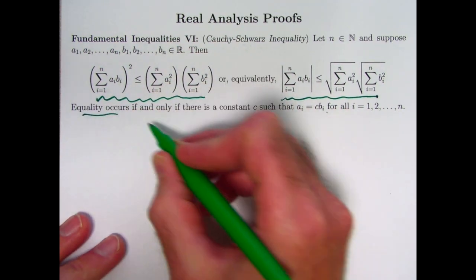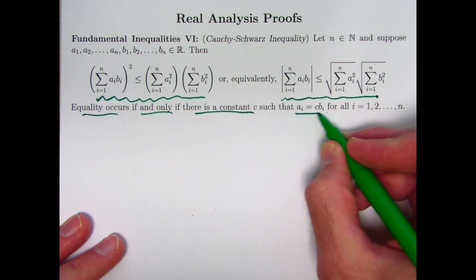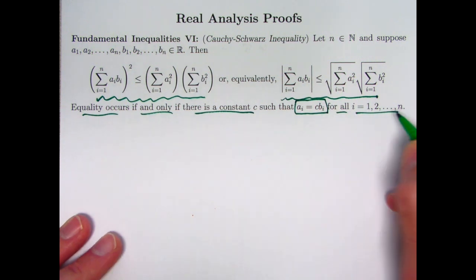Turns out equality occurs if and only if there is a constant c so that each aᵢ is c times the corresponding bᵢ for the same c for all i goes from 1 to n.